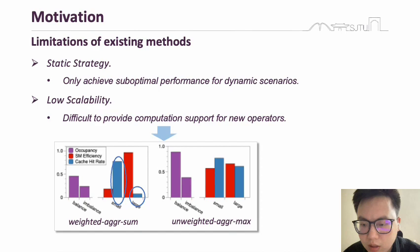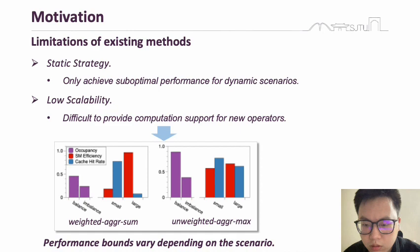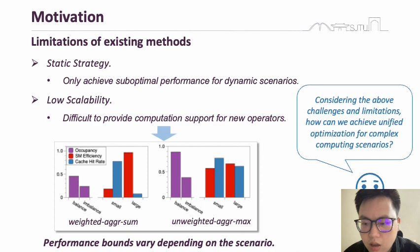Furthermore, we also observe variation in the results between the two operations. Therefore, it is clear that the performance bounds vary depending on the computation scenario. The question that arises: given the above challenges and limitations, how can we achieve unified optimization for complex computing scenarios?